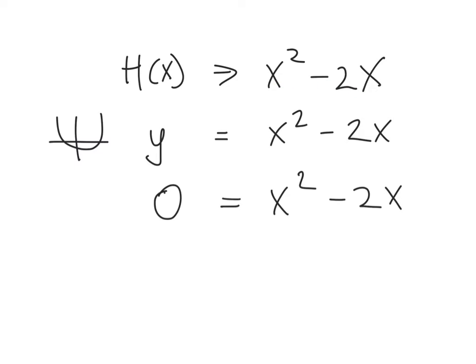A quadratic always has the shape of a u-shape or an n-shape. And if it's a plus x squared, it's always going to be a u-shape. So really the question is asking us, where does the curve cut across the x-axis, this curve here?